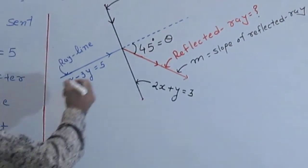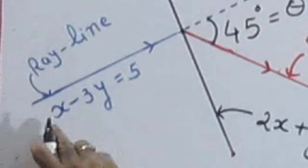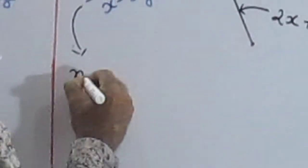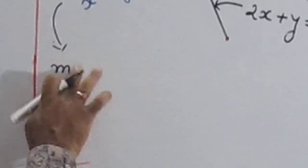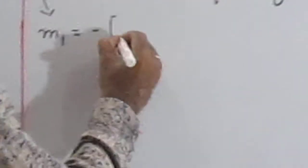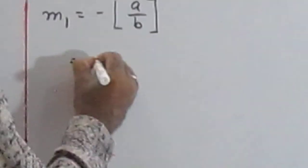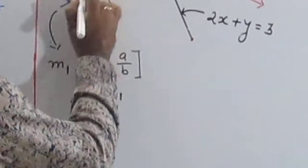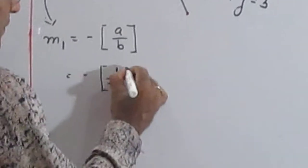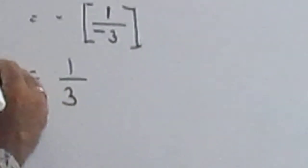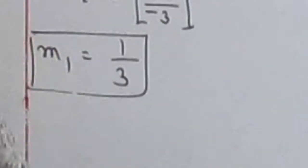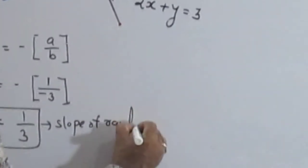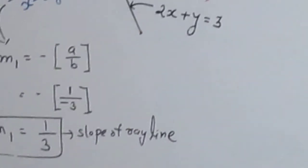Now, we also find the slope of the line x minus 3y is equal to 5. Suppose the ray line slope we consider here is m1. m1 is equal to minus a upon b. Here, a is the coefficient of x equal to 1, and the coefficient of y is equal to minus 3. So the slope m1 is equal to 1 by 3 — that is the slope of the ray line.